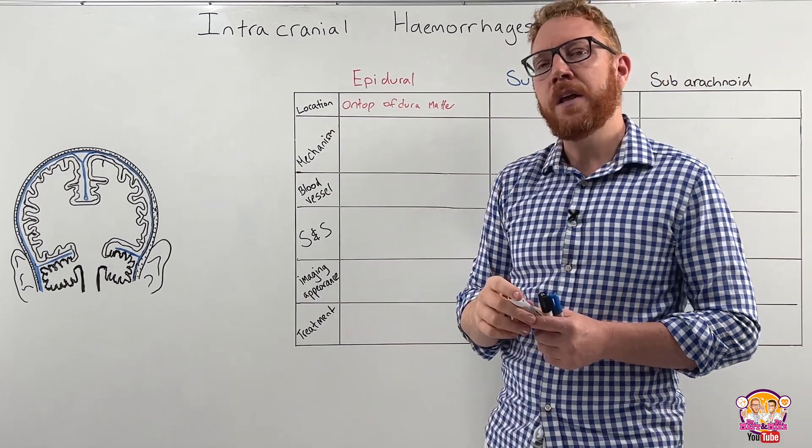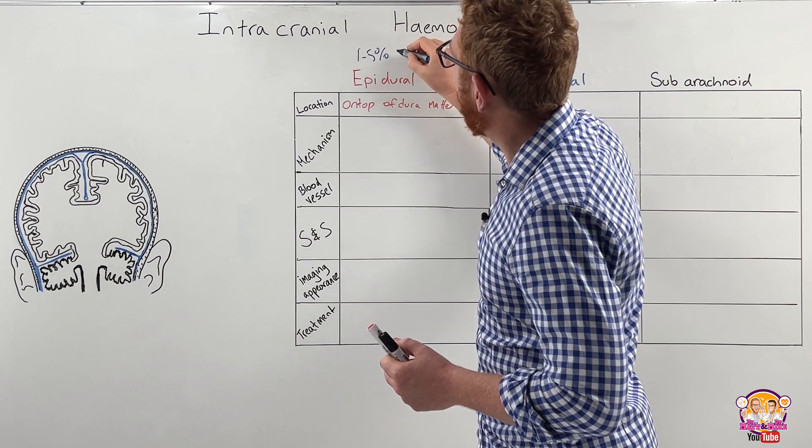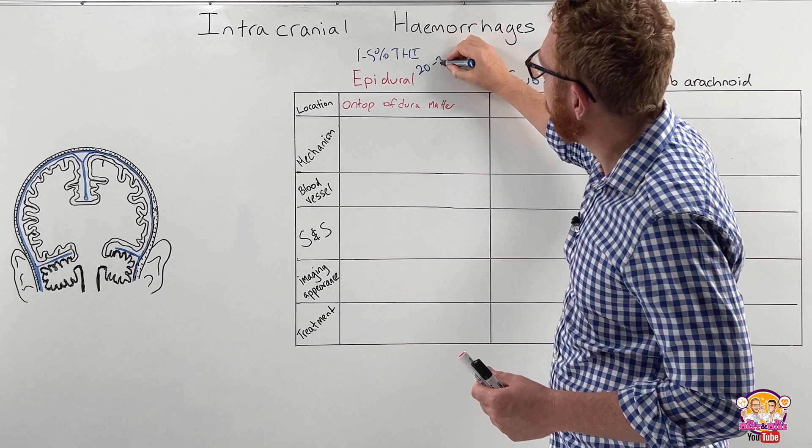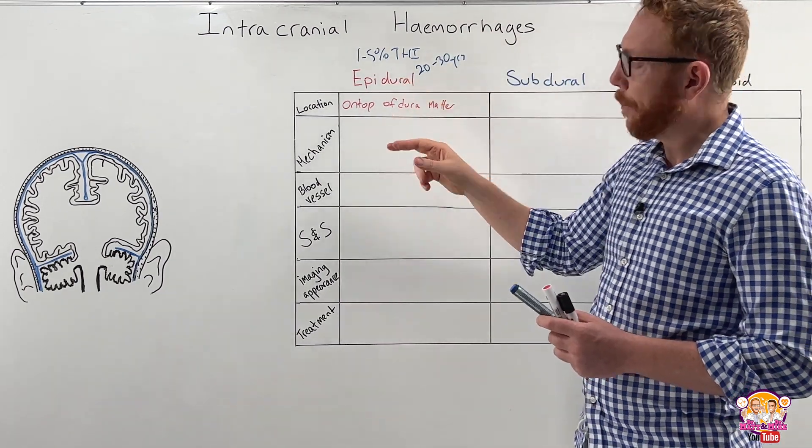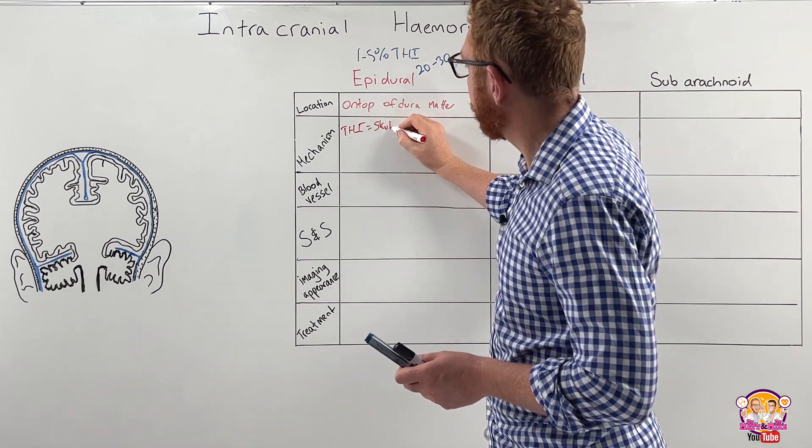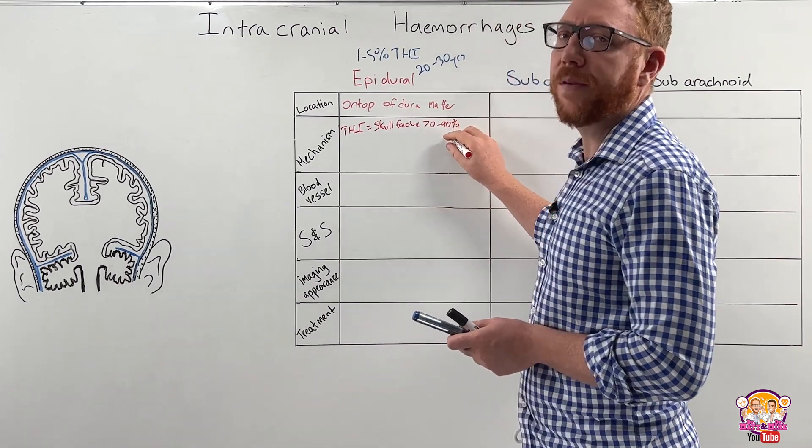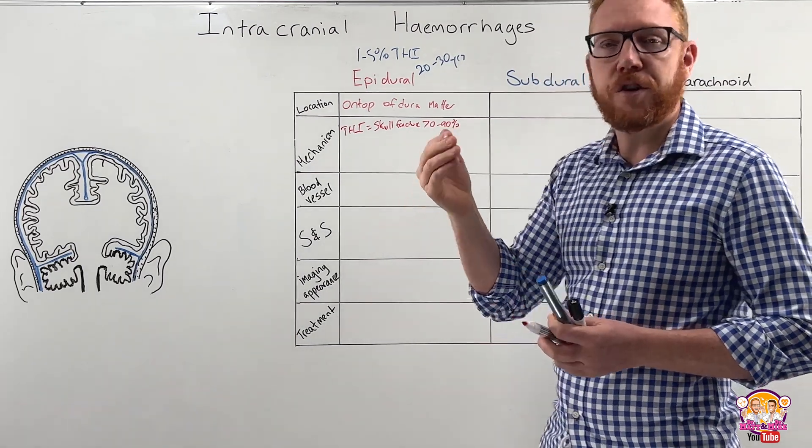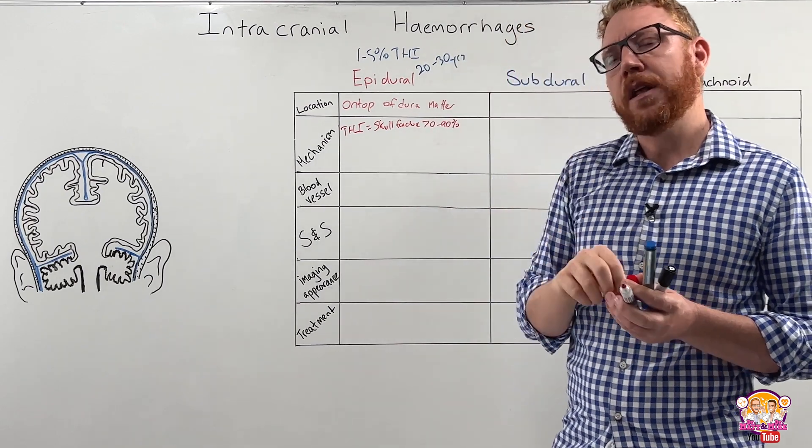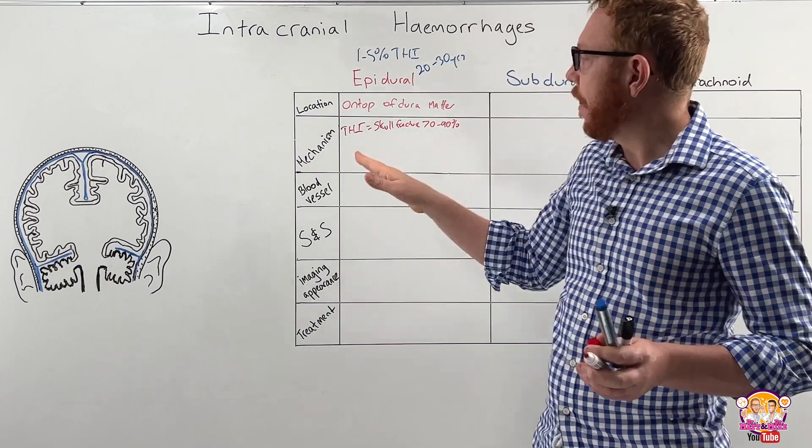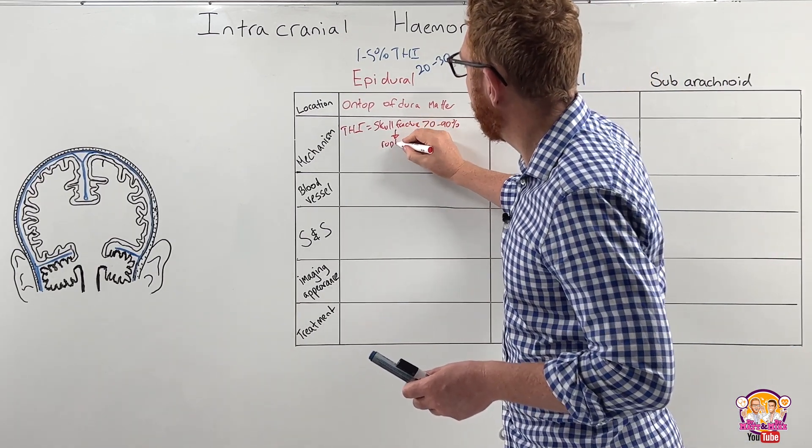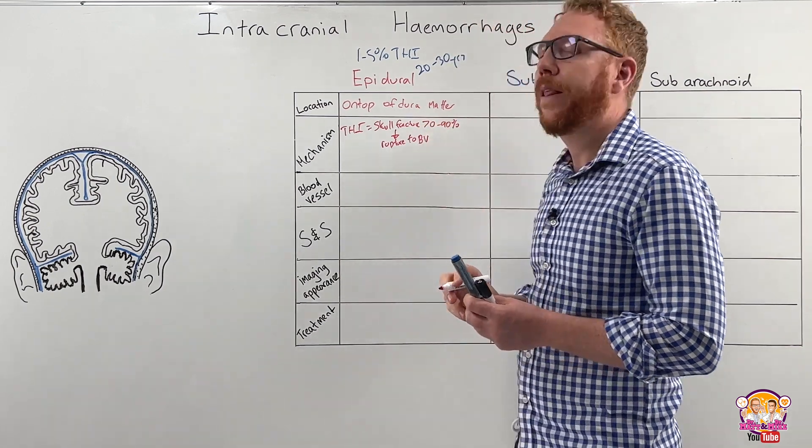So the mechanism behind this bleed: epidural, one to five percent of all traumatic head injuries will result in this type of bleed. It's more common in the younger population, average age between 20 to 30 years. Basically what's going to happen is we have a traumatic head injury which will result in a skull fracture. About 70 to 90 percent of epidural bleeds will have a skull fracture associated with it. The most common location is in the temporal region, the terion, the thinnest part of the skull. Right underneath that is the middle meningeal artery. So the skull fractures, comes inwards, ruptures the blood vessel.